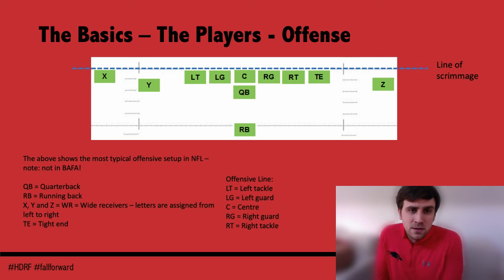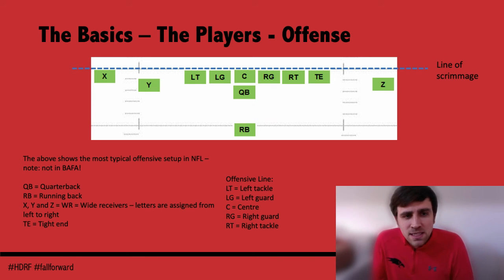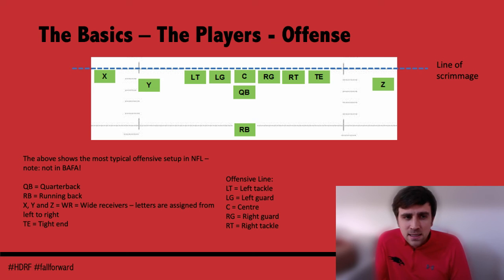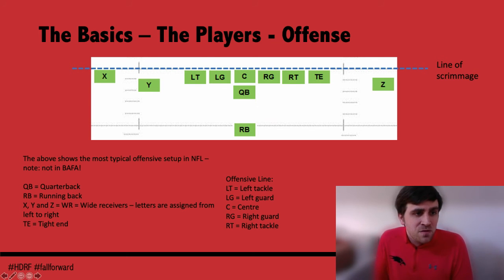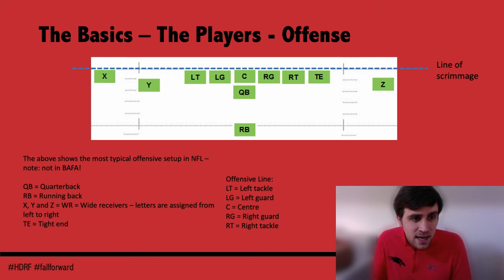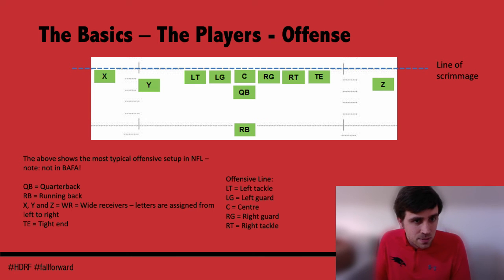The diagram shown is typical of the NFL or college game rather than BAFA — we don't tend to see a lot of tight ends used in the UK, where you might find a tight end replaced by another wide receiver or a full back. You've obviously got the quarterback, a running back sitting in the backfield behind the offensive line and behind the line of scrimmage. Wide receivers line up on the perimeters but also inside the hash marks, and are usually lettered from left to right: X, Y, Z, and sometimes W.